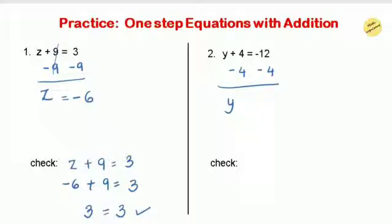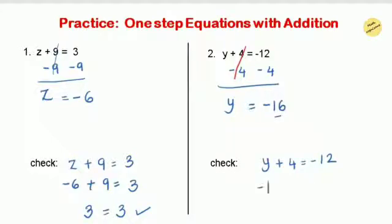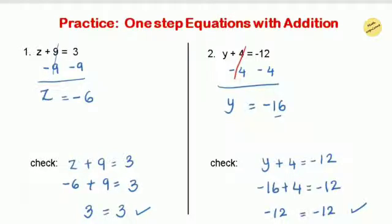Subtracting 4 from both sides: the left side is left with y (4 minus 4 is 0), and on the right-hand side, since both signs are the same we add and keep the sign, giving y equals negative 16. To check, write the equation as it is and substitute y with negative 16: negative 16 plus 4 equals negative 12. We subtract and use the greater number's sign — 16 minus 4 gives 12 with a negative sign. Both sides are equal, so y equals negative 16 is correct.